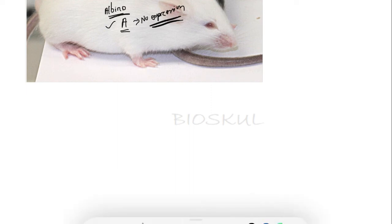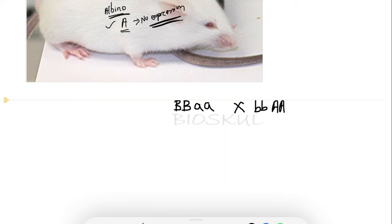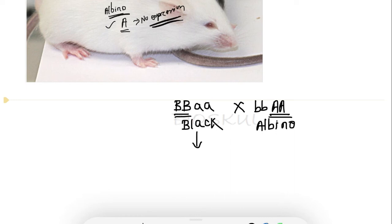We need to find the phenotypic ratio in the F2 generation to see whether it deviates from the dihybrid cross. The parental cross is BBAA × bbaa. Capital B expresses the black color trait independently, while the dominant form of gene A has no expression, meaning it is albino. The gametes produced will be BA and bA respectively.